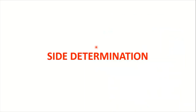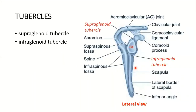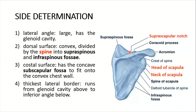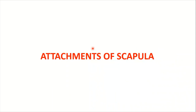Let's determine the side of the scapula — whether it's left or right. The lateral angle has the large glenoid cavity. The dorsal surface has the spine of the scapula, which divides it into supraspinous and infraspinous fossae. The costal surface has the concave subscapular fossa to fit onto the convex chest wall, and the thickest lateral border runs from the glenoid cavity to the inferior angle.